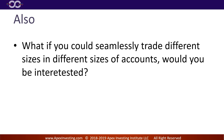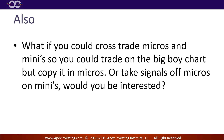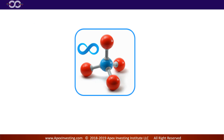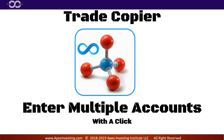What if you could seamlessly trade different sizes in different sizes of accounts? Would you be interested? What if you had cross-trade micros and minis so you could trade in the big boy chart but copy it in the micro chart, or take signals off a micro chart on the minis? Would you be interested? Well, the great news is that it's now possible with the Apex Trade Copier.